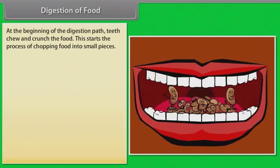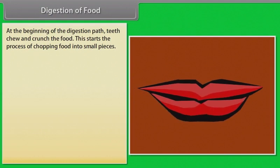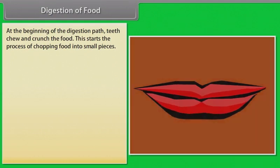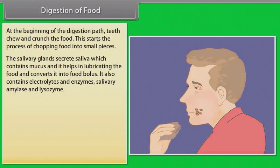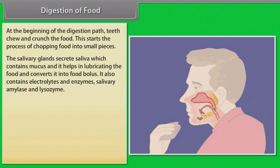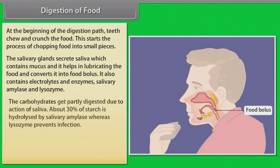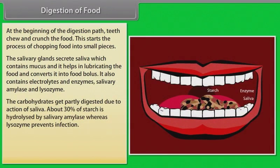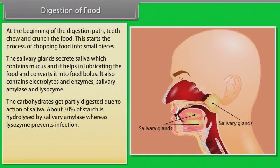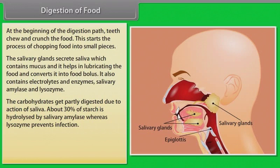At the beginning of the digestion path, teeth chew and crunch the food, chopping it into small pieces. The salivary glands secrete saliva containing mucus, which lubricates the food and converts it into a food bolus. Saliva also contains electrolytes and the enzymes salivary amylase and lysozyme. About 30% of starch is hydrolyzed by salivary amylase, while lysozyme prevents infection.